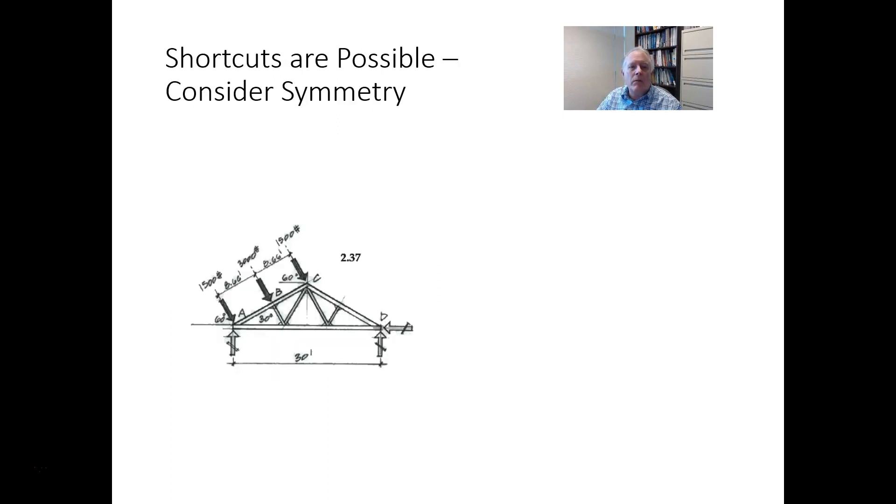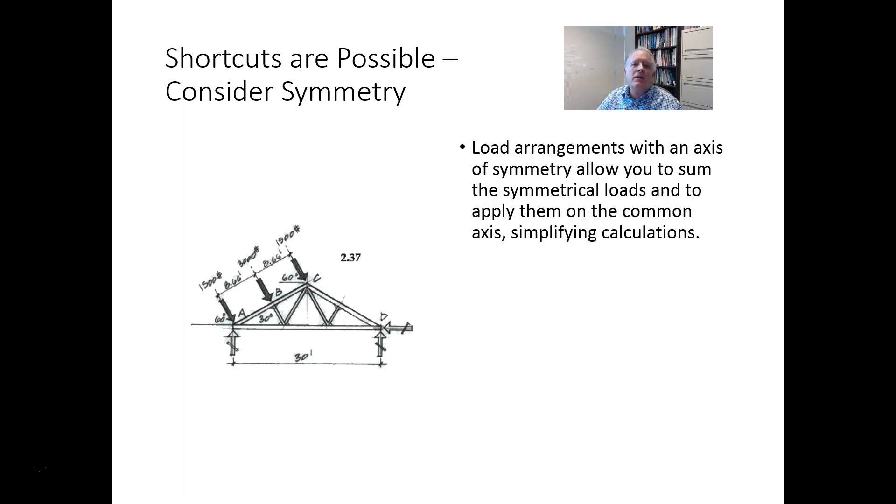So here, for this particular problem, a shortcut is possible. We have a symmetry to the loading. In this case, the line of action of the force at B could be considered an axis of symmetry. And on each side of that symmetry, we have a force equidistant from that axis, and of the same quantity.